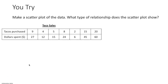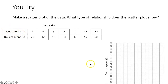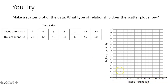You try! We need to graph each of these points on a coordinate plane. What is our independent variable and what is our dependent variable? The dollars spent would depend on how many tacos you buy, so tacos purchased are the independent variable on the x-axis, and dollars spent is the dependent variable on the y-axis. We can plot each point — these are our x values and these are our y values.